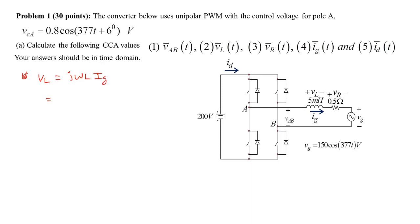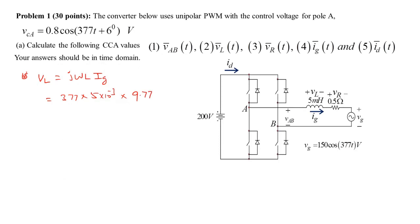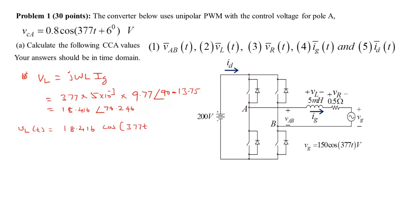Vl = 377 × 5×10⁻³ × 9.77, and the angle is the current angle plus 90° from the j operator, giving 90° − 13.75° = 76.25°. So Vl = 18.416∠76.24°. In the time domain, vl(t) = 18.416·cos(377t + 76.24°) volts.